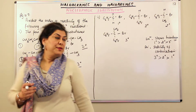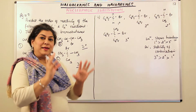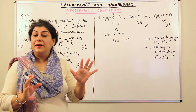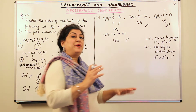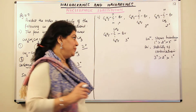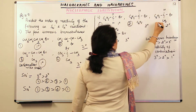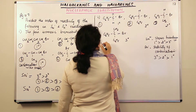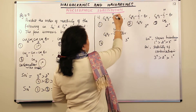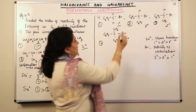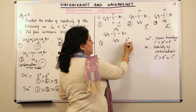Let us now do the second part. Four compounds are given to us and we have to arrange them according to their reactivity towards SN1 or SN2 mechanism. Let us number these compounds 1, 2, 3, and 4. Out of these, compound 1 is a primary bromide, there are two secondary bromides, and there is one tertiary.